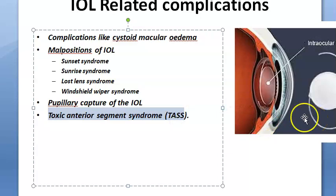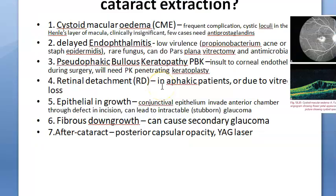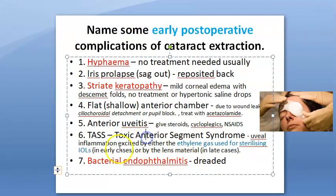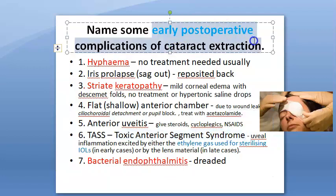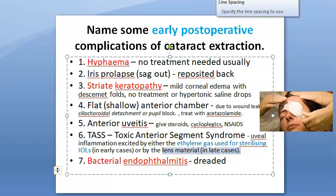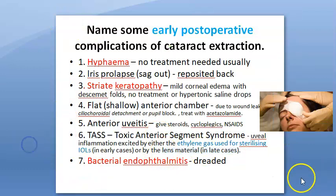Pupillary capture of the IOL can occur due to iritis — the pupil captures the IOL. Toxic anterior segment syndrome (TASS) is also an IOL-related complication: in early cases due to ethylene gas used for sterilizing the IOL, and in late cases due to the IOL lens material itself. For exam purposes: TASS is an early post-operative complication due to ethylene gas used for sterilizing IOLs.